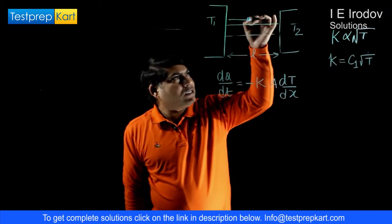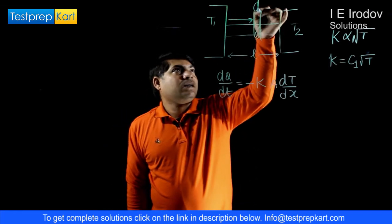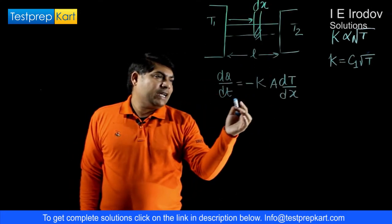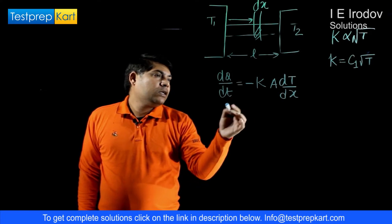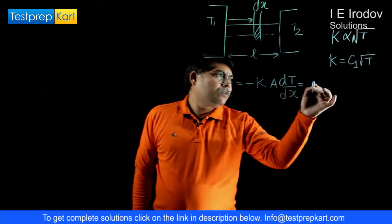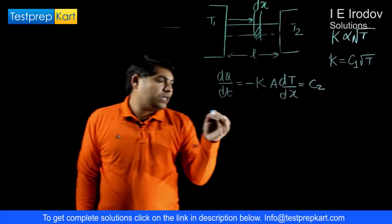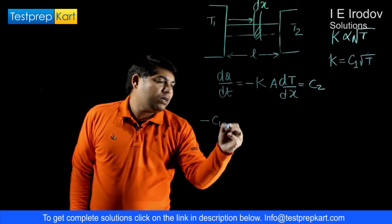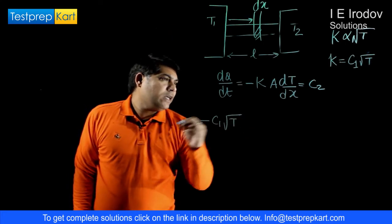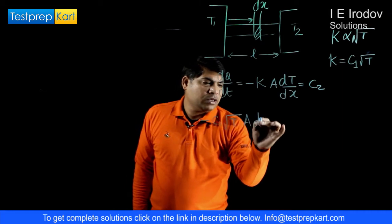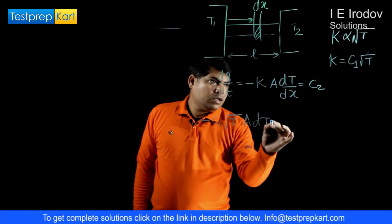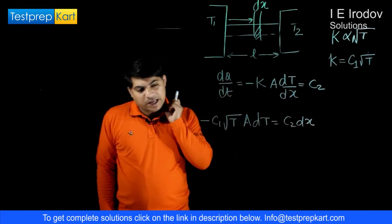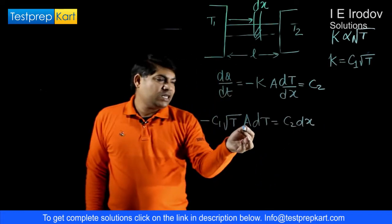It is K into area of the cross section into dT over dx. Let us take a small segment dx here. From here we can write that dQ over dt is constant. Let us take it as a constant C1 and C2. This A is also constant.